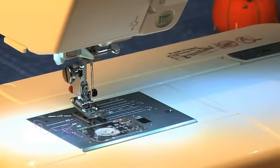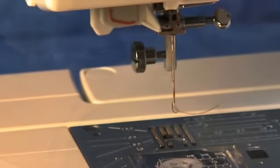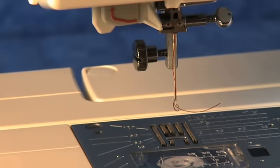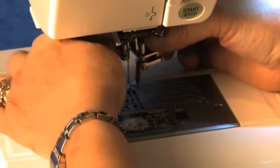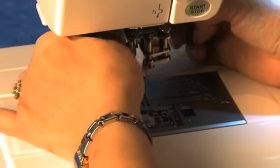To install the foot on your machine, loosen the presser foot screw and remove the existing foot and ankle on your machine. Attach the free motion quilt foot to the machine and tighten the screw.